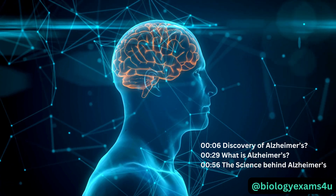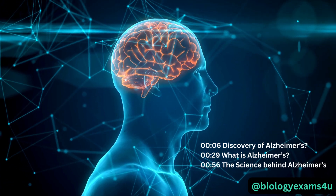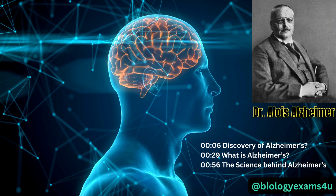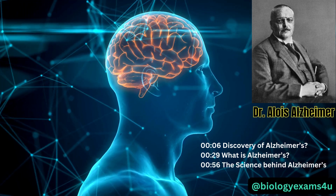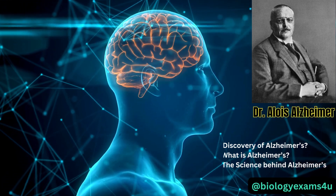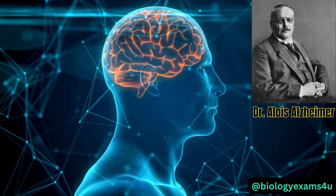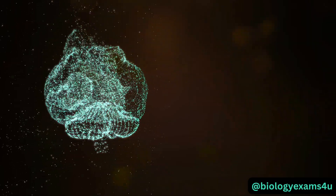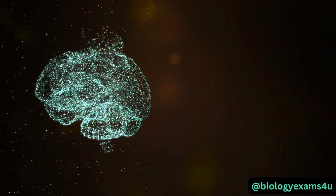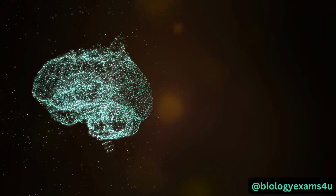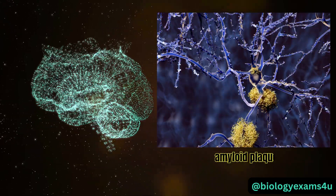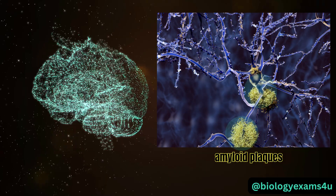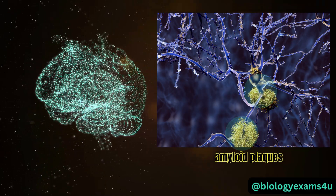Alzheimer's disease and its effects on the brain were first studied and discovered by Dr. Alois Alzheimer in 1906. He found abnormal clumps of protein in the brain tissue of a patient who showed signs of memory loss, language problems, and confusion. Today, these clumps are known as amyloid plaques and neurofibrillary tangles, which are hallmarks of Alzheimer's.